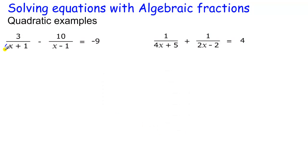Multiply by x plus 1 throughout, so we multiply that by x plus 1, this by x plus 1, and this by x plus 1. This x plus 1 cancels, leaving me with 3 minus 10 lots of x plus 1, all over x minus 1, equals minus 9x plus 1.